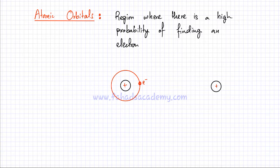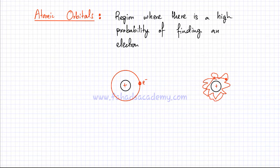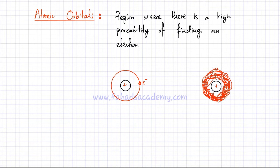A better visualization is that the electron would be moving very fast in different areas, all over the place, around the nucleus. There would be a region where there's a very high probability of finding this electron — it would be moving really fast around the nucleus, making it hard to pinpoint exactly where it is at any particular instant.